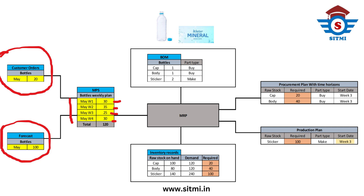So a total of 120 quantity in the month of May is required to be produced or manufactured. This input goes to MRP. This is one of the inputs to MRP, but MRP also takes input in the form of a bill of material. We are manufacturing a bottle, and the raw material required to manufacture one bottle is one quantity of cap, one quantity of bottle body, and two quantities of sticker.